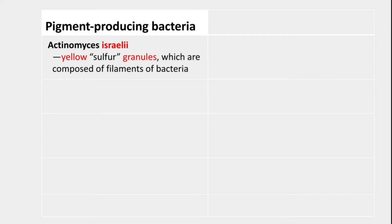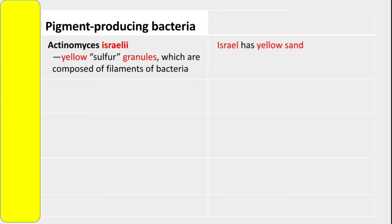Actinomyces israelii produces yellow sulfur granules, which are composed of filaments of bacteria. So here you have your yellow pigment. How do you remember this? Israel has yellow sand — that's your mnemonic for Actinomyces israelii.